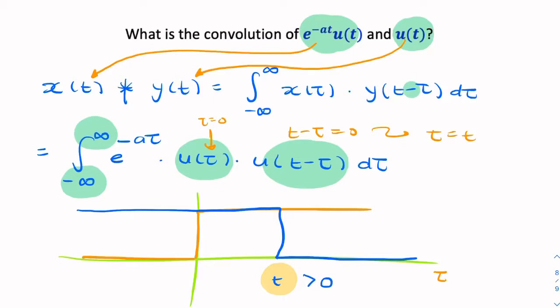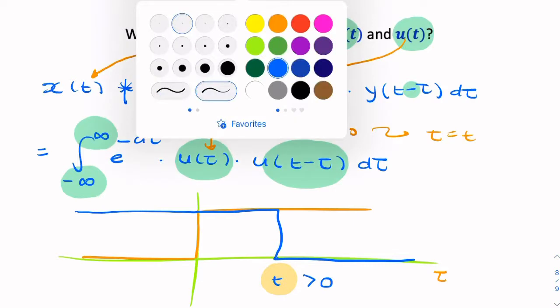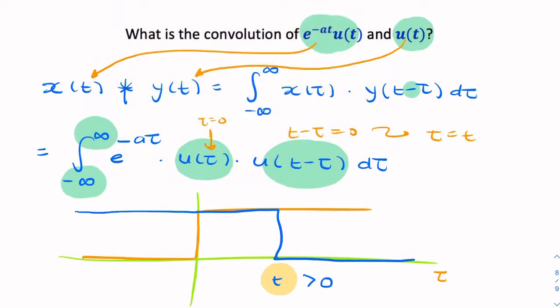But that doesn't have to be the case. So t could be negative, it could be positive, or it could be zero. So let's assume for now that it's positive. If I multiply those two by my exponential function, then when is the product non-zero? The product is clearly only non-zero in this window of time here between zero and t.